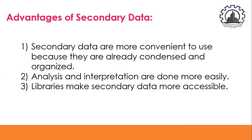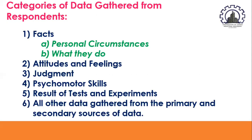The categories of data gathered from respondents — take note that respondents are those individuals who are asked or requested by a researcher to supply data or information about his research problem. The categories of data supplied by respondents are: first, we have facts. Facts are recollections, observations, and perceptions of respondents about themselves and of other people — for example, personal circumstances and also what they do.